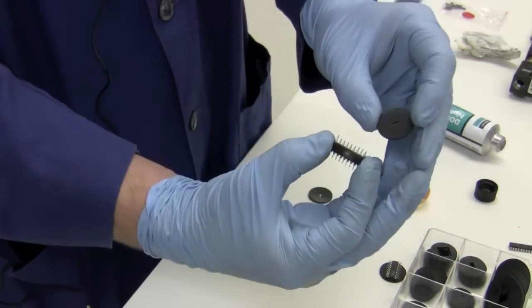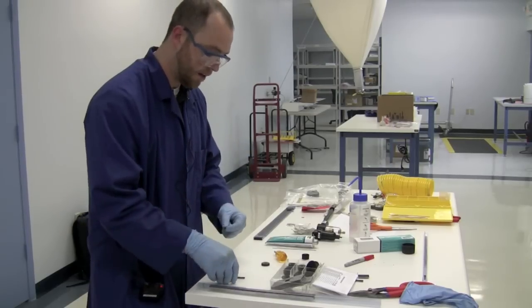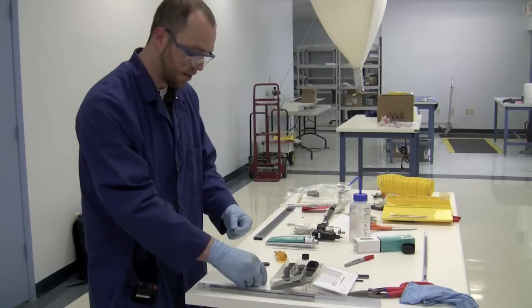First thing you've got to do is flatten the leads out so you have a nice flat surface for your backing. Essentially I did that by just pressing it against the table and flattening them out.